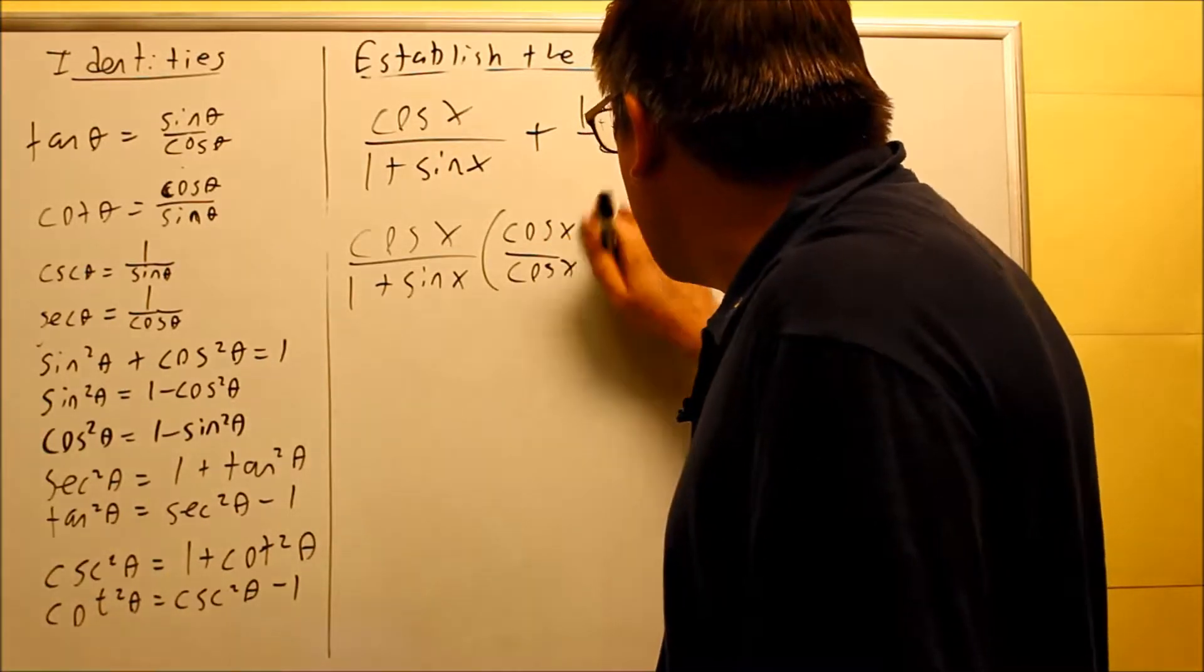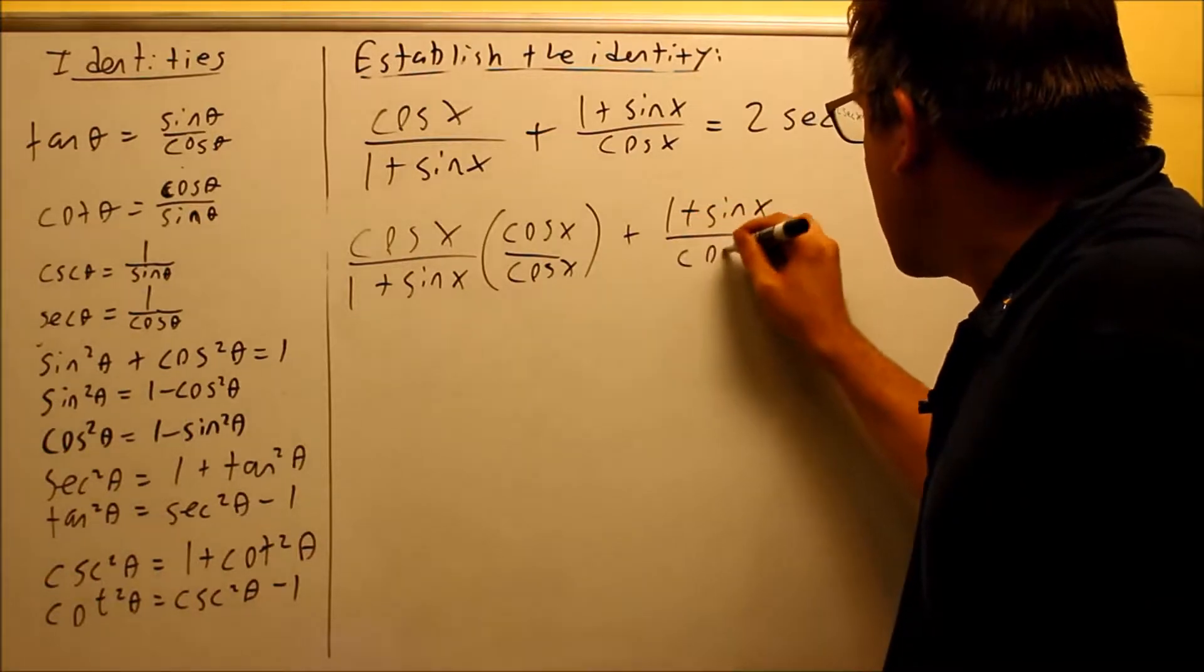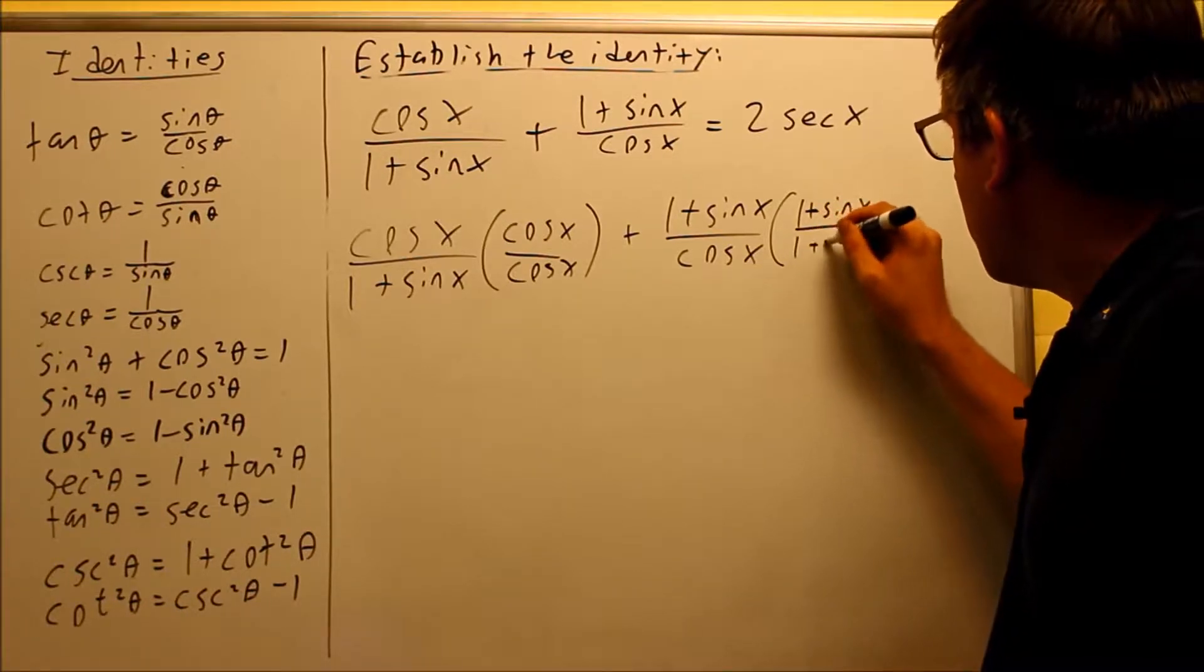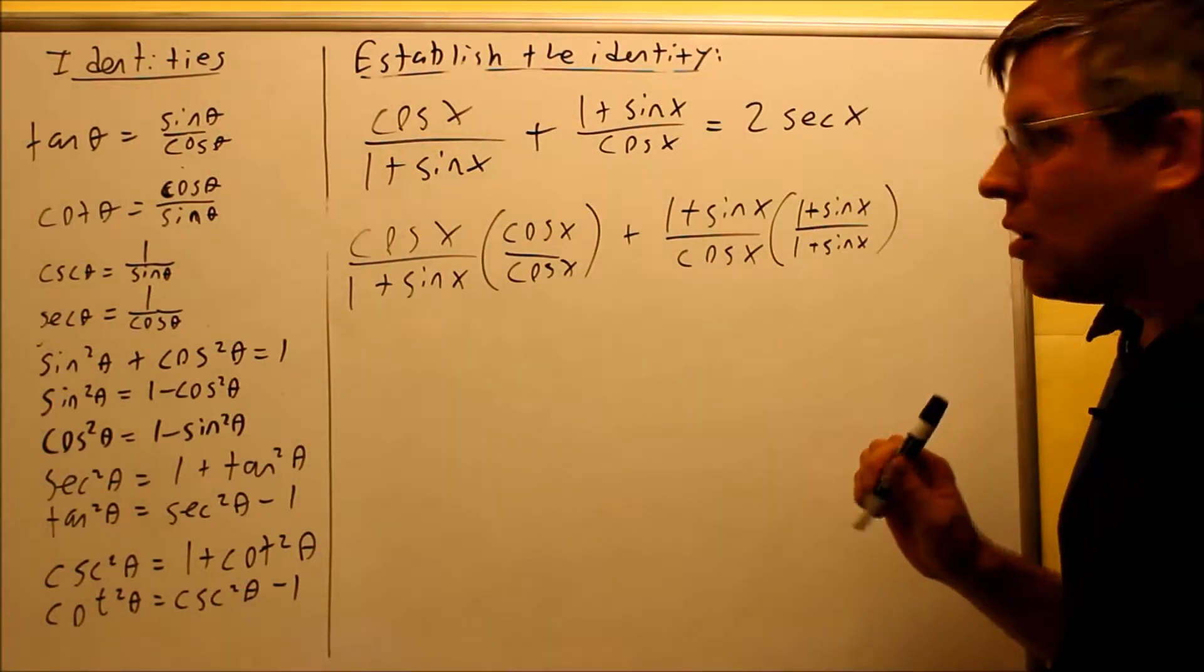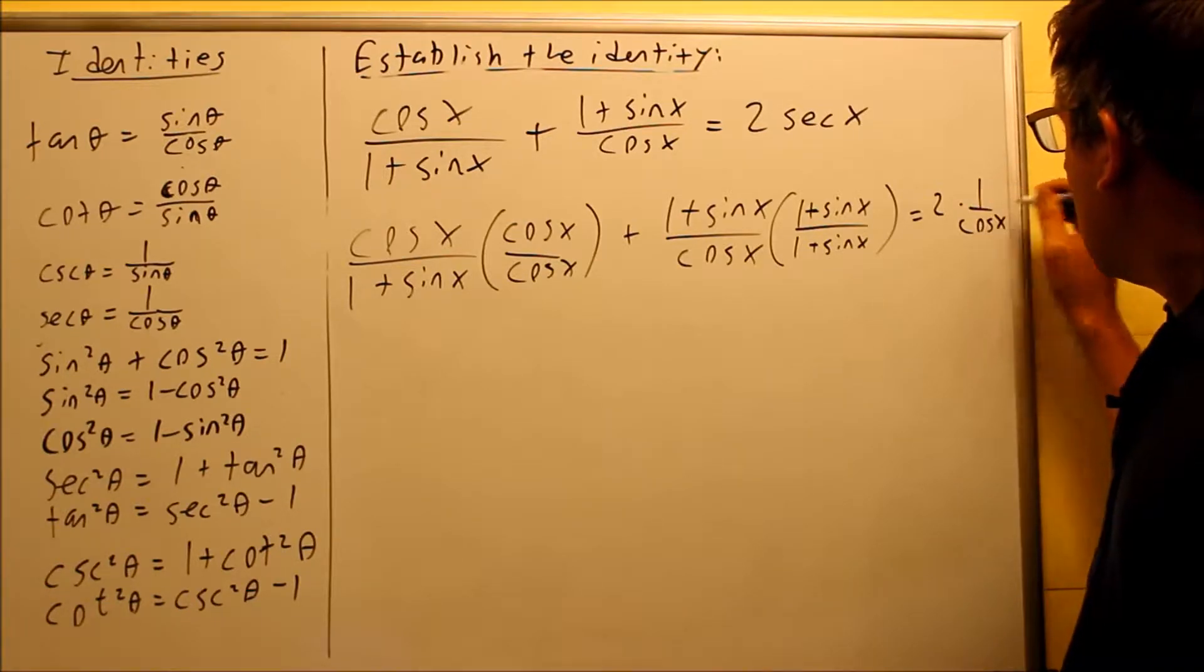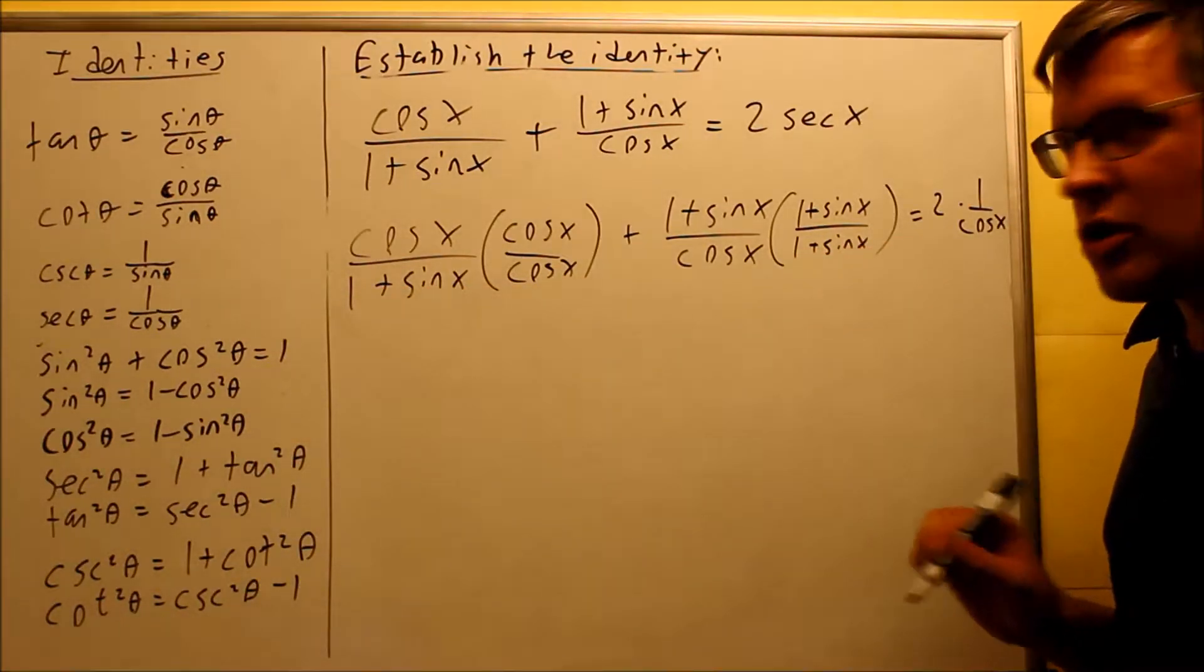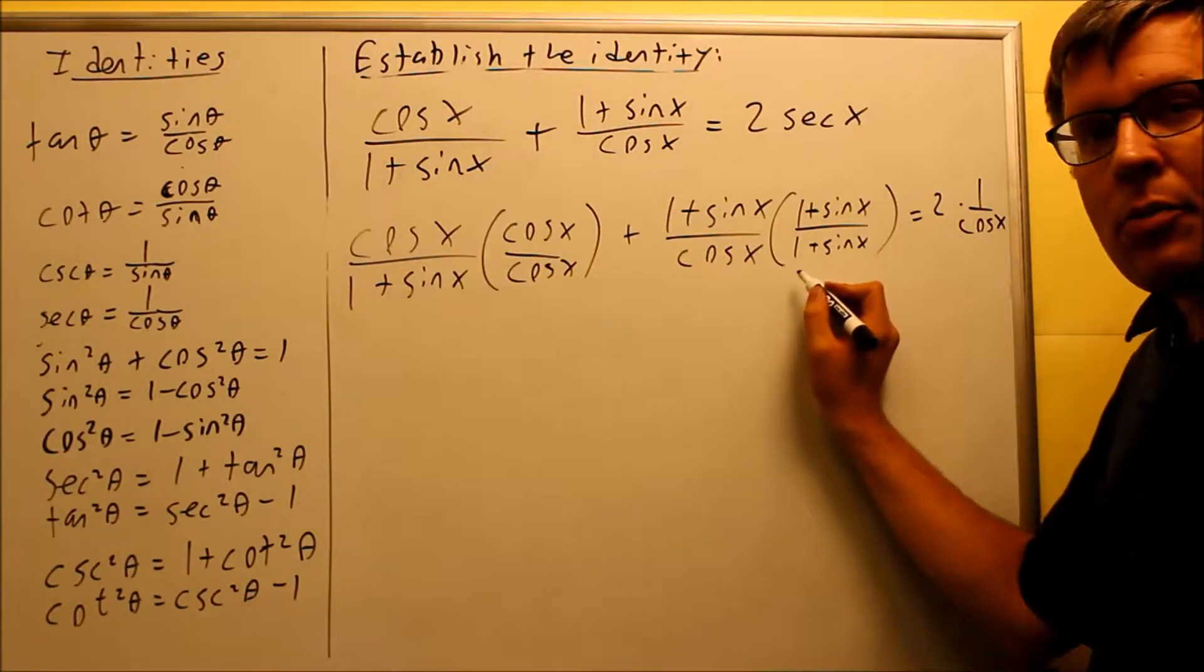The next one, I have the cosine x on the bottom, but I'm missing the 1 plus sine x. So I'm going to multiply that top and bottom, 1 plus sine x. And over here, that's 2, and then secant is the same thing as 1 over cosine. I want to do that because I want to make sure everything's all in terms of sines and cosines to get both sides to be equal to each other.